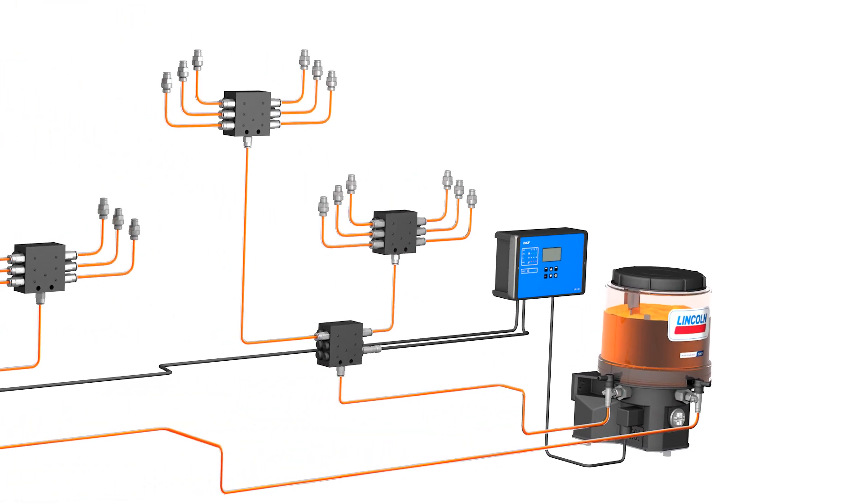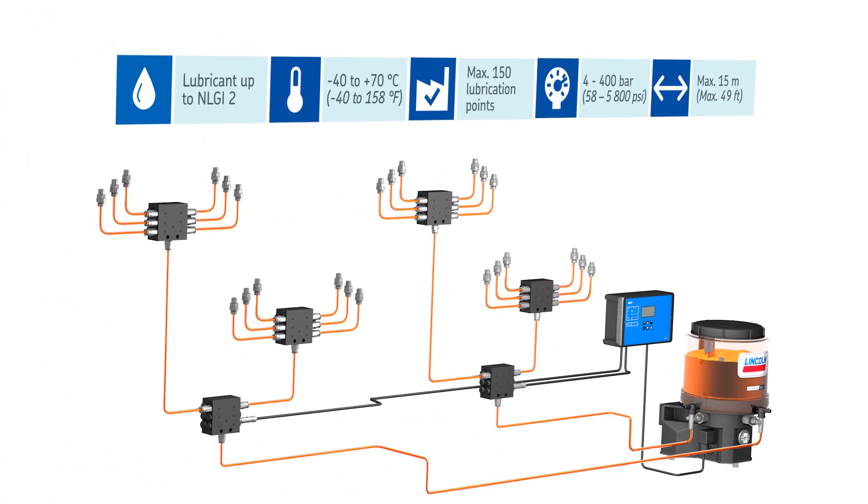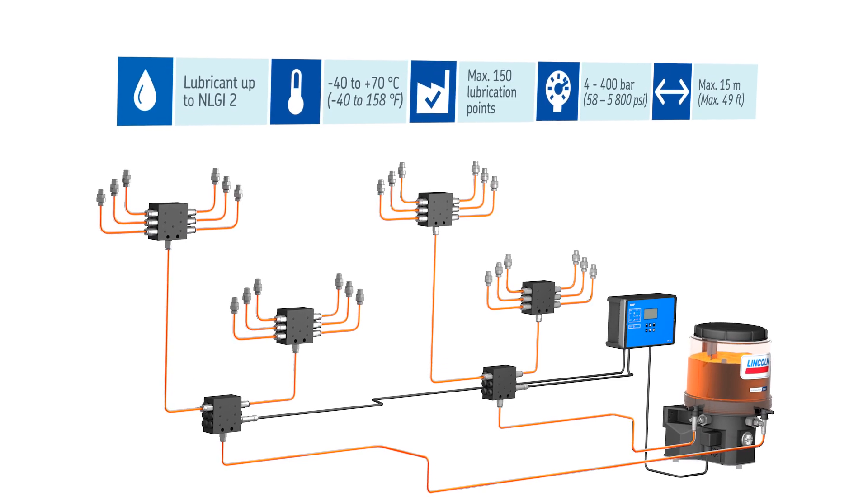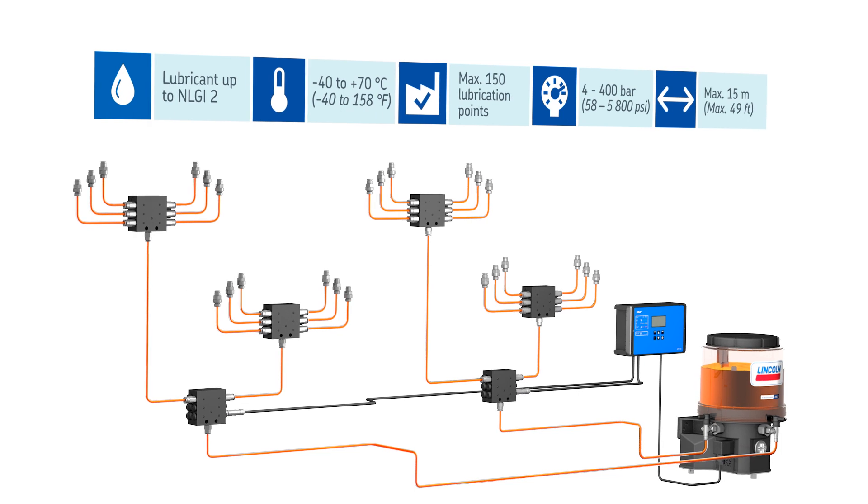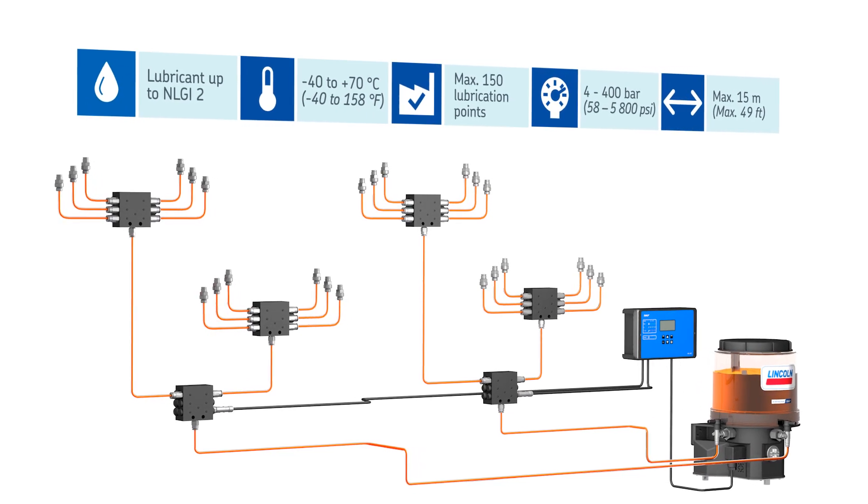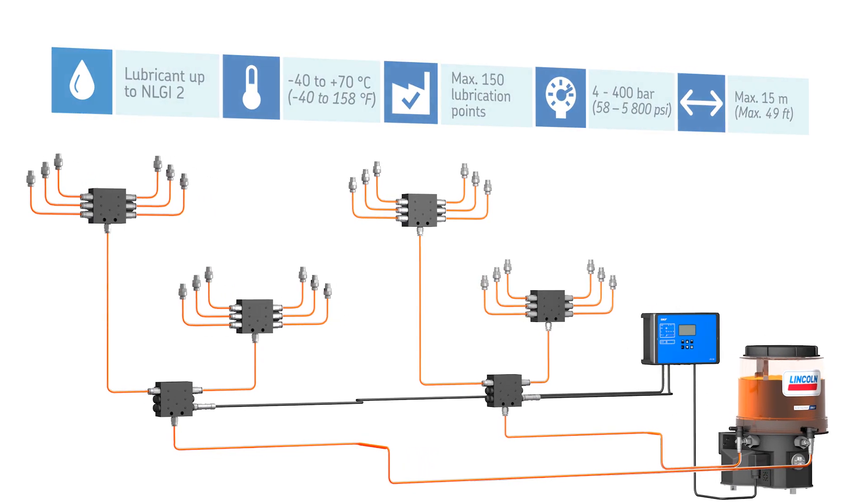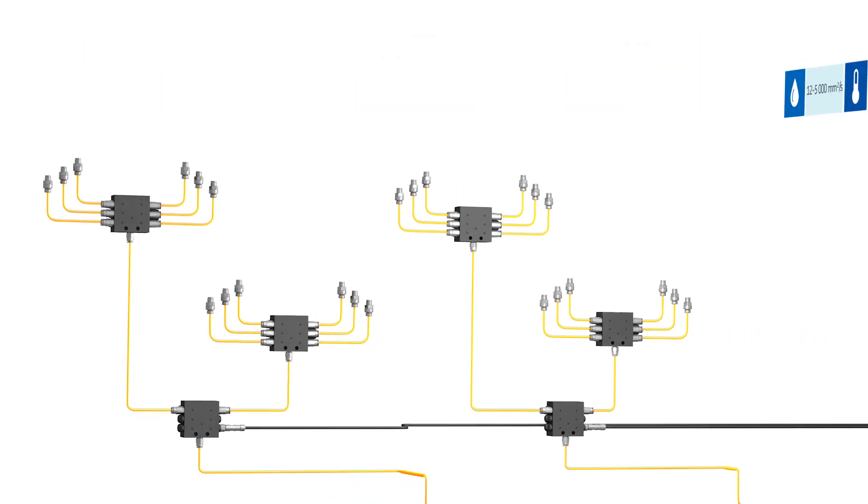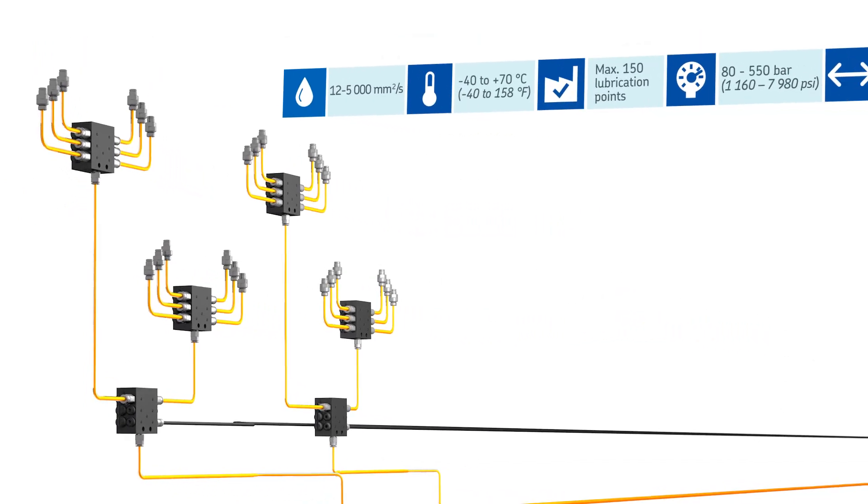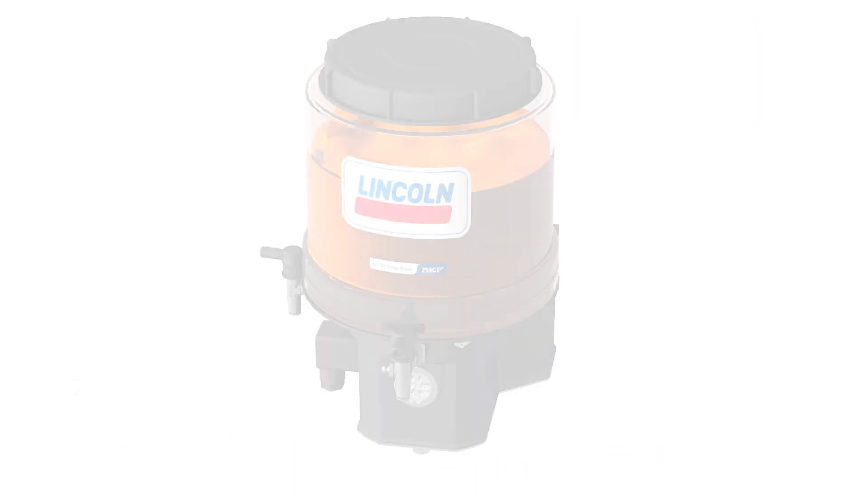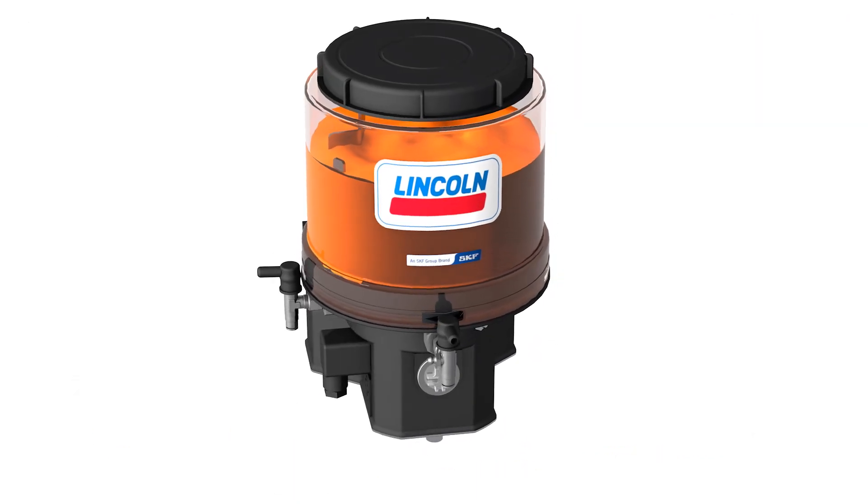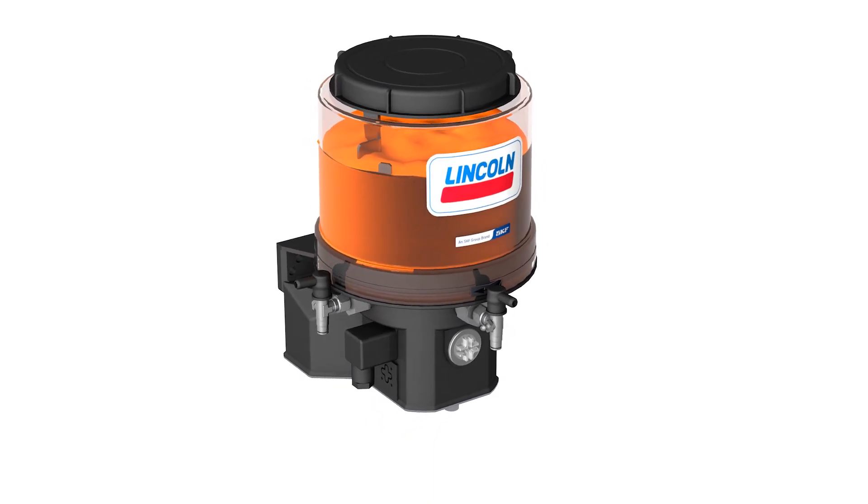These reliable systems work within a wide range of temperatures from minus 40 to plus 70 degrees Celsius (minus 40 to plus 158 degrees Fahrenheit). While progressive grease systems cover distances of up to 15 meters (49 feet), progressive oil systems cover even higher distances of up to 100 meters (328 feet).